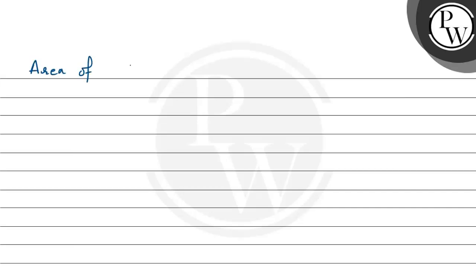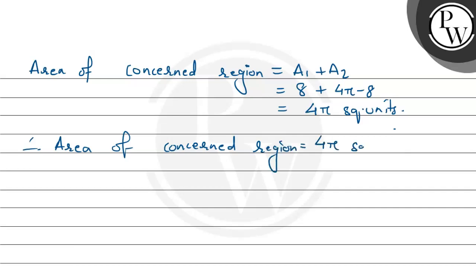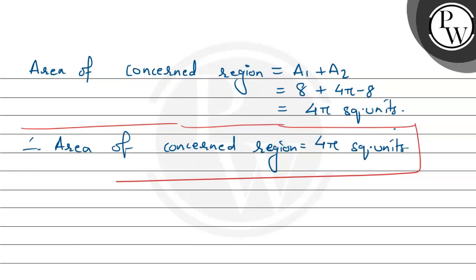Finally, the area of the concerned region is A1 plus A2, which equals 8 plus (4pi minus 8), giving us 4pi square units. That is our final answer. I hope you understood it well — best of luck and thank you!